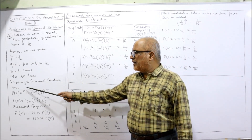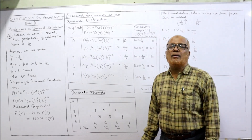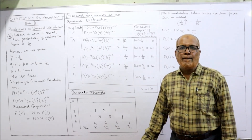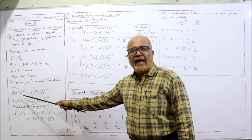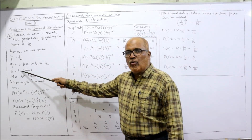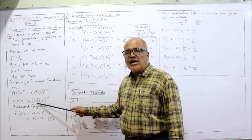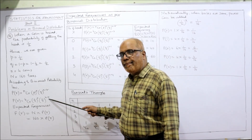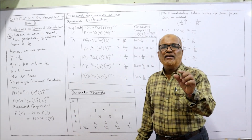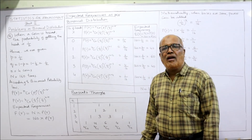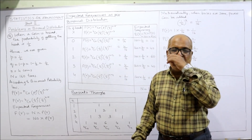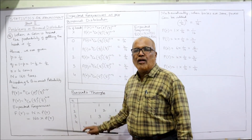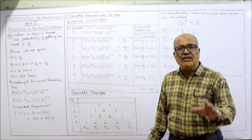According to the binomial probability law, P(r) = nCr × p^r × q^(n−r). Applying our values: P(r) = 4Cr × (1/2)^r × (1/2)^(4−r). To find the expected frequency, we multiply P(r) by capital N = 160. So expected frequency = 160 × P(r).